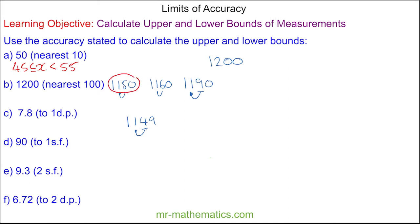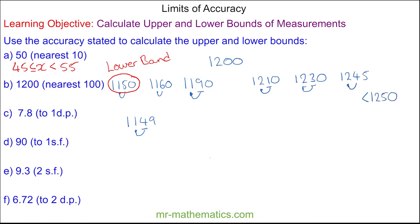So 1,150 is your lower bound. For the upper bound, it could have been 1,210, because the 1 ten would not round up the 200s. It could have been 1,230, or even 1,245 — again, the 4 tens would not have changed the 200s. So the maximum it could have been was less than 1,250, and this is the upper bound. As an inequality, if we call this number x, then 1,150 ≤ x < 1,250.